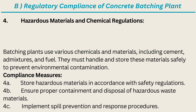4. Hazardous Materials and Chemical Regulations. Batching plants use various chemicals and materials, including cement, admixtures, and fuel. They must handle and store these materials safely to prevent environmental contamination. Compliance Measures: A. Store hazardous materials in accordance with safety regulations. B. Ensure proper containment and disposal of hazardous waste materials.